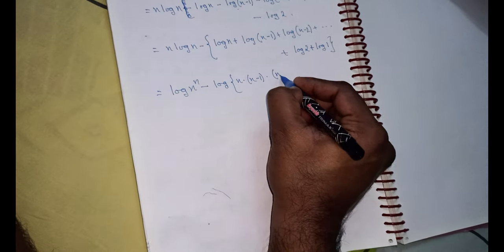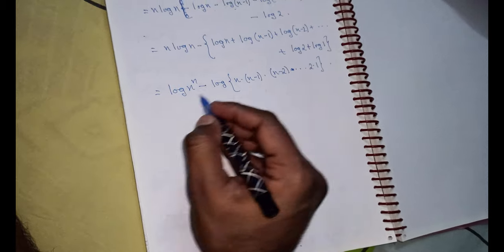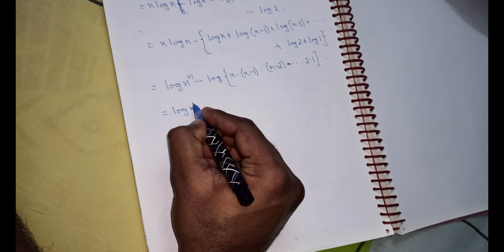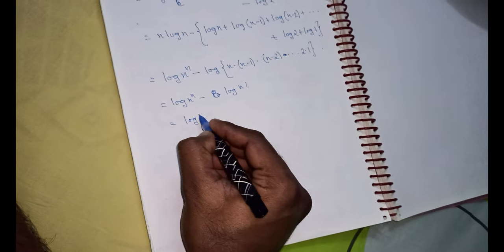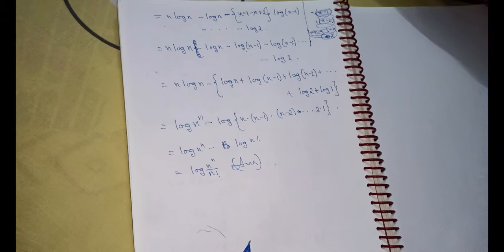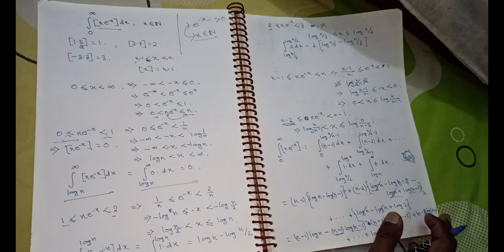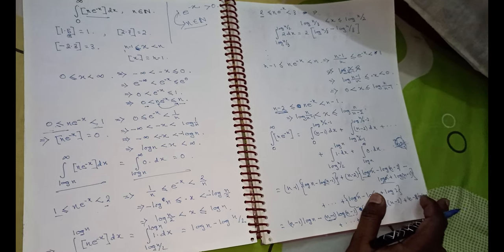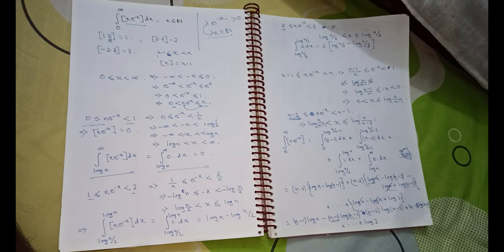This follows directly from properties of logarithm. The sum log n plus log(n minus 1) plus dot dot dot plus log 2 plus log 1 equals log of n factorial. So the final answer is log of n to the power n divided by n factorial, or equivalently log(n^n / n!). This is the answer we were looking for. Each step of this problem is very beautiful — you guys can take a screenshot of this.